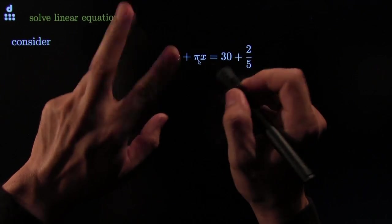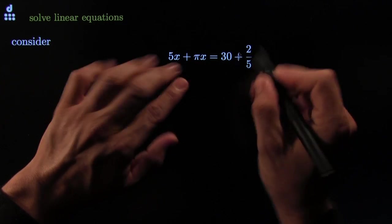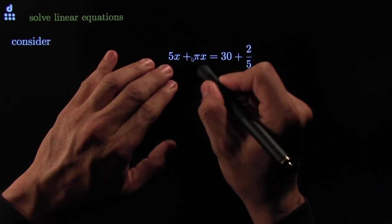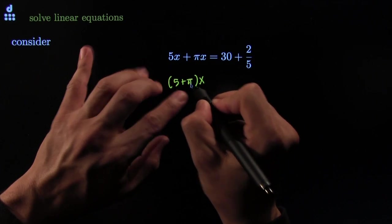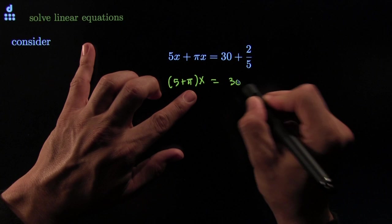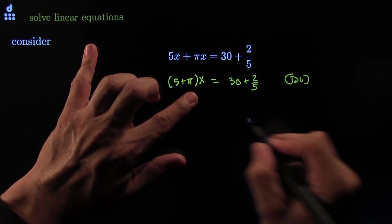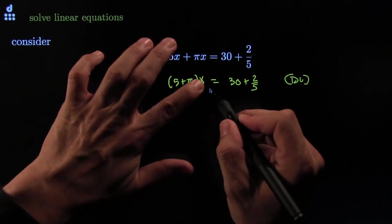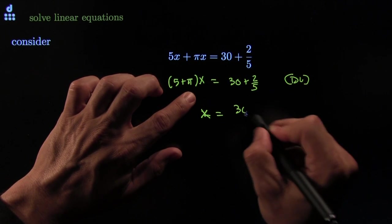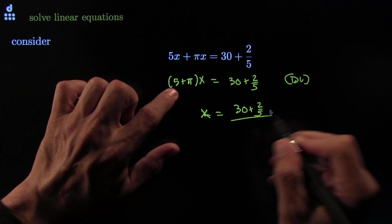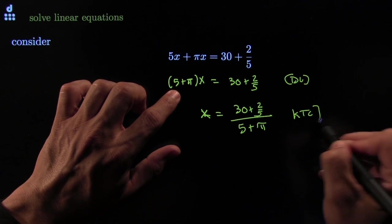I have x's here and x's here — more than one x — and no x's on the right-hand side. All the x's are on one side. I can gather my x's using the distributive law: it looks like someone distributed an x there. Again, by the distributive law, that gives me one x, one coefficient. All I've got to do now is kill the coefficient: 30 plus 2 over 5, all over 5 plus π. Kill the coefficient.